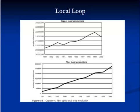Local loops generally are two-pair twisted copper wires that provide just enough bandwidth to provide voice services. However, optical fiber in the last mile is becoming much more common as converging technologies to residential homes become a reality. Note the increase in optical fiber installations and decrease in POTS copper wiring starting in about 1999.